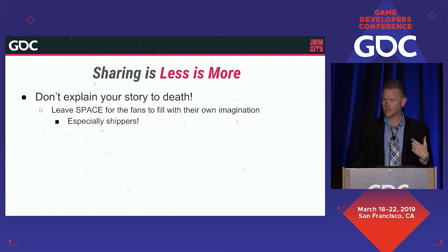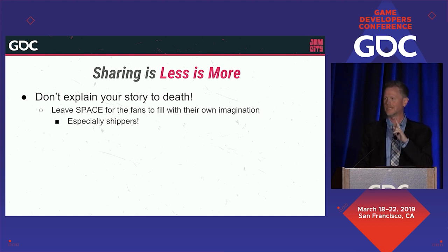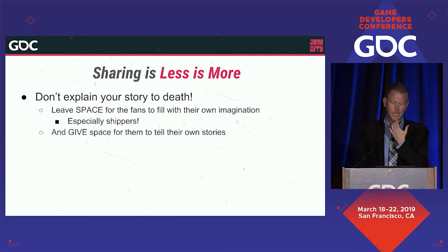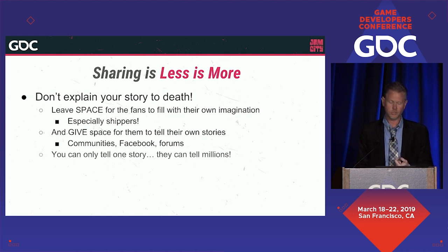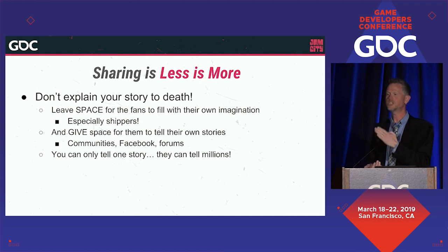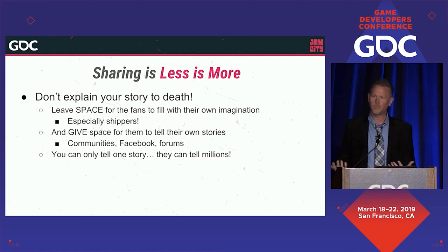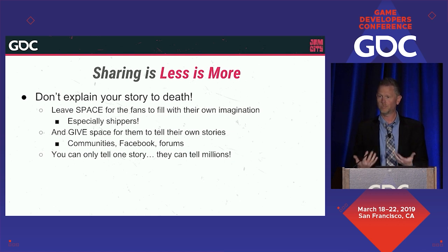Especially shippers — if you have two characters with any kind of sexual chemistry, don't be tempted to have them kiss and have a relationship. You will get so much more mileage out of a wink or a look — I guarantee it. Give people space to tell their own stories on forums. Fan fiction is really powerful. Give these communities a place to talk. You can tell one story, then you ship it. But they can tell a million — let them tell a million. Build your stories to be accessible in that way.